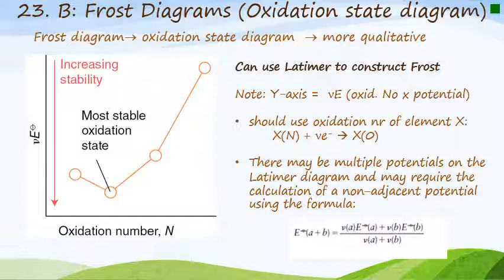On the left is a typical Frost diagram. It is a plot of the number of electrons multiplied by the standard potential against oxidation number. There is increasing stability going from the top of the graph downwards, and the oxidation number increases from left to right. The most stable oxidation state is the one indicated, and that is why the Frost diagram is so useful.